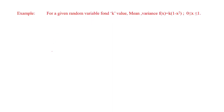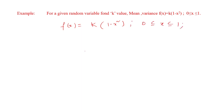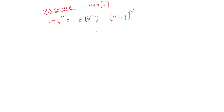Here is an example. For the given random variable, find the k value, mean value, and variance. The density function f(x) is given as f(x) = k(1 - x²) for the limits 0 < x ≤ 1. We need to first find E(x) and then E(x²).